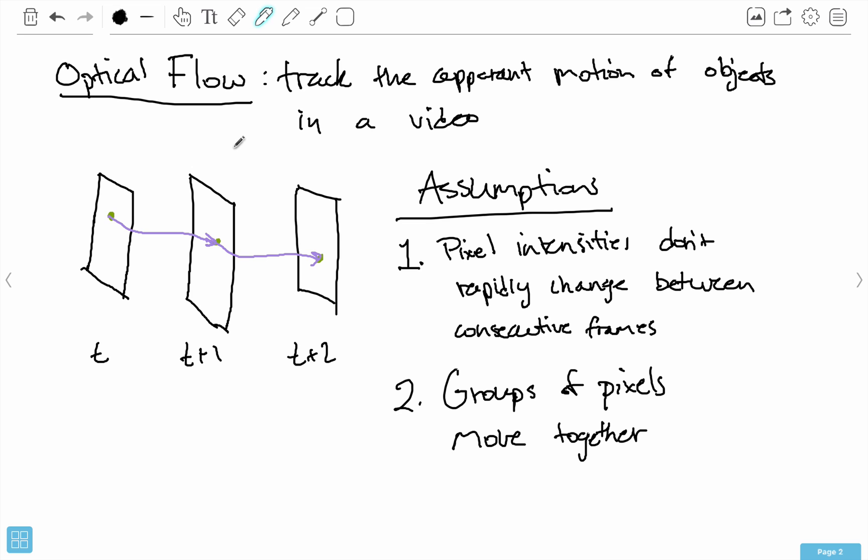So these assumptions have real world implications. I mean, in the real world, if you're taking videos, stuff just doesn't teleport everywhere. That would be really bad. And so these assumptions are perfectly valid to make based on the real world implications of this. Now, there are ways if you were to take a video and do like some video editing stuff, you could break these assumptions intentionally, but we're not really going to be considering that.